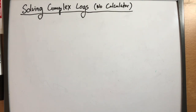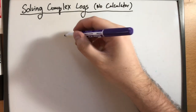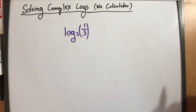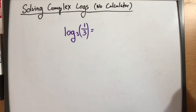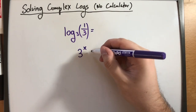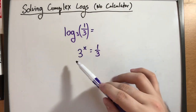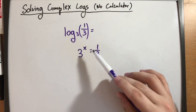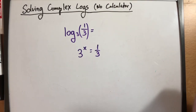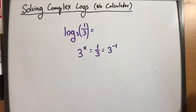Let me show you some slightly more complicated problems with other rules that we need to use. For example, log base 3 of 1 over 3. We are trying to figure out the exponent that I have to raise 3 to so that it is equal to 1 over 3. Using x to represent the unknown exponent, 3 raised to what is equal to 1 third? A very important exponential rule is negative exponents, because 1 over 3 is equal to 3 raised to the negative 1. Therefore, the exponent has to be negative 1.